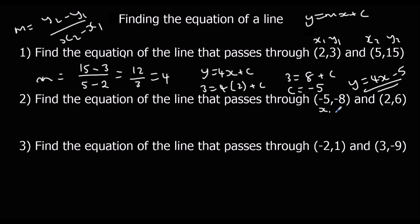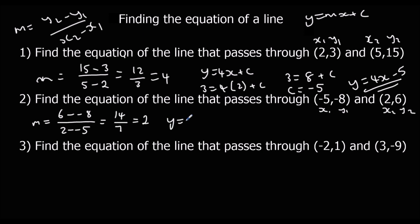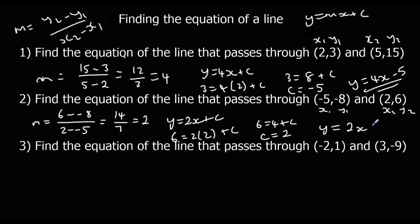For the second question, labelling x1, y1, x2, y2: the gradient is 6 minus minus 8 over 2 minus minus 5, which is 14 over 7, giving a gradient of 2. So y equals 2x plus c. Substituting in the second pair of values — 6 equals 2 times 2 plus c, so 6 equals 4 plus c — c must be 2. Therefore y equals 2x plus 2.